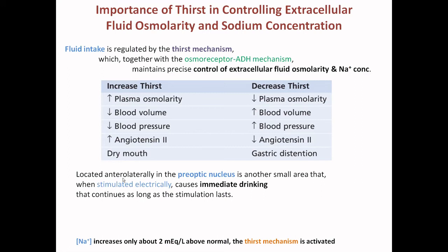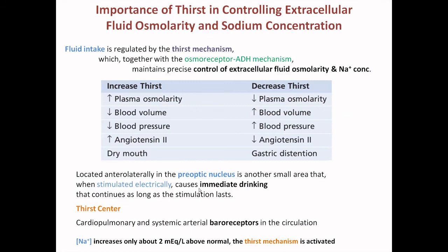Thirst centers are located in the anterior lateral pre-optic nucleus, which we have already discussed. In experiments, when this area is stimulated electrically, immediate drinking occurs. This confirms physiologically that by manipulating neuron stimuli we can make an animal feel thirsty, and the urge continues as long as the stimulation lasts. The same cardiopulmonary and systemic arterial baroreceptors responsible for ADH release from the posterior pituitary or inhibiting ADH release are also controlling thirst.